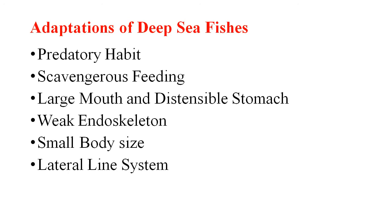When we talk about the adaptation of deep sea fishes, a very important point is the predatory habit. The deep sea system is away from the reach of the sun's rays, hence the deep sea environment is pitch dark. The absence of light prevents the growth of plants and photosynthetic organisms. So deep sea animals feed on other animals — they are carnivores. An example is Gastrostomias.